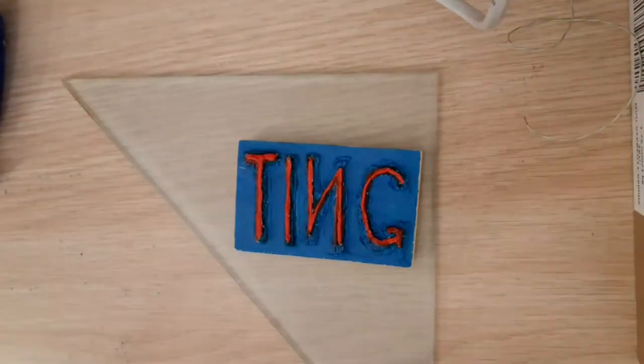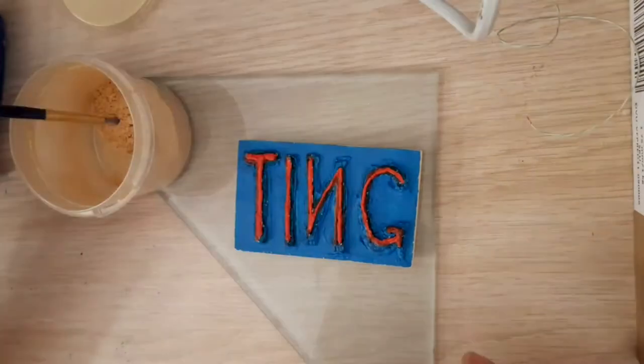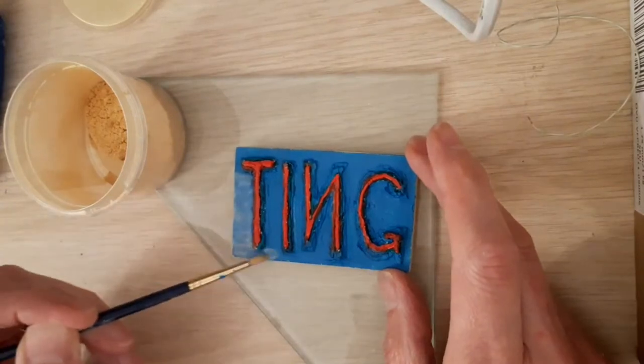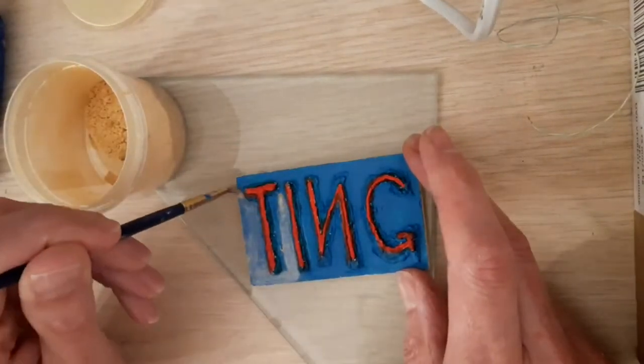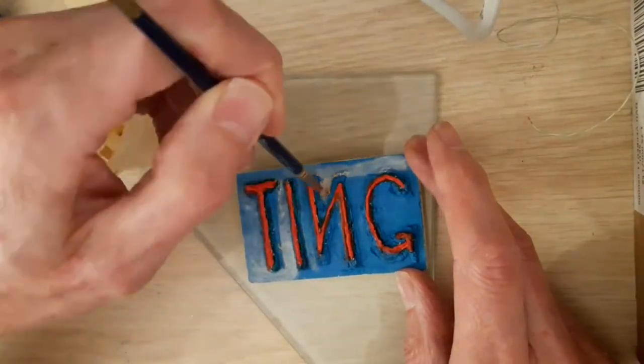You can see here I've tidied the blue up. And now I'm just whacking a bit of gold mica, sort of pigment on there. Just give it a bit of a sort of antiquey sort of look.